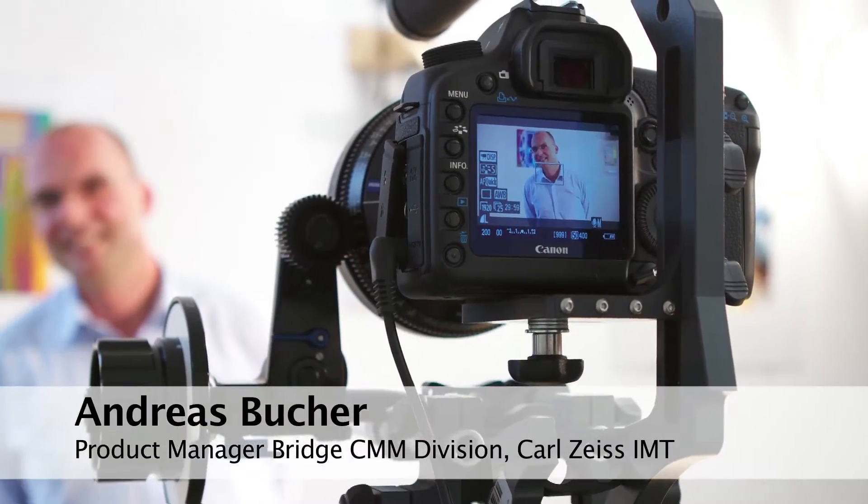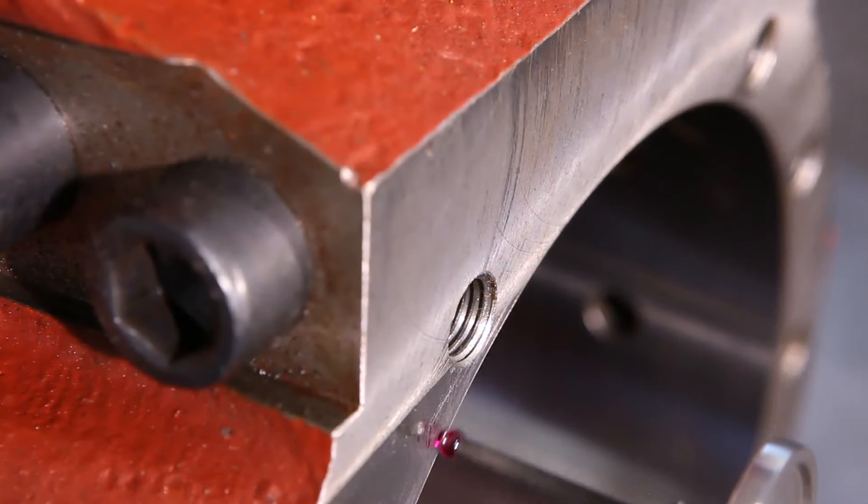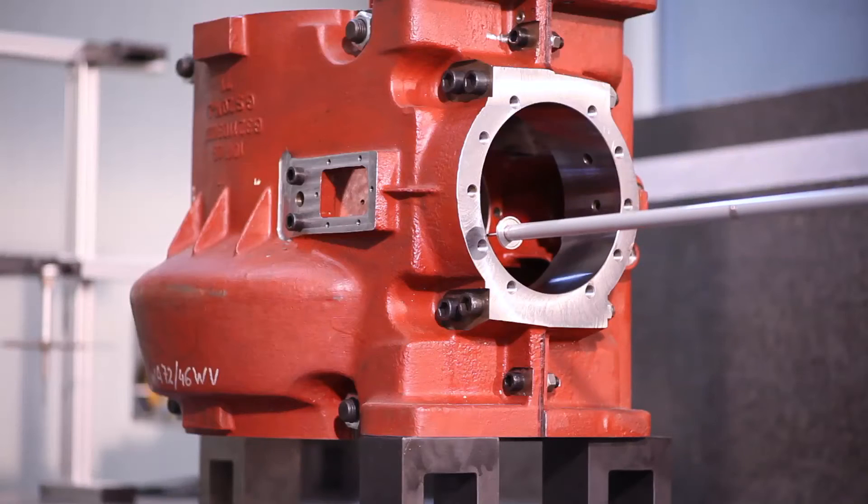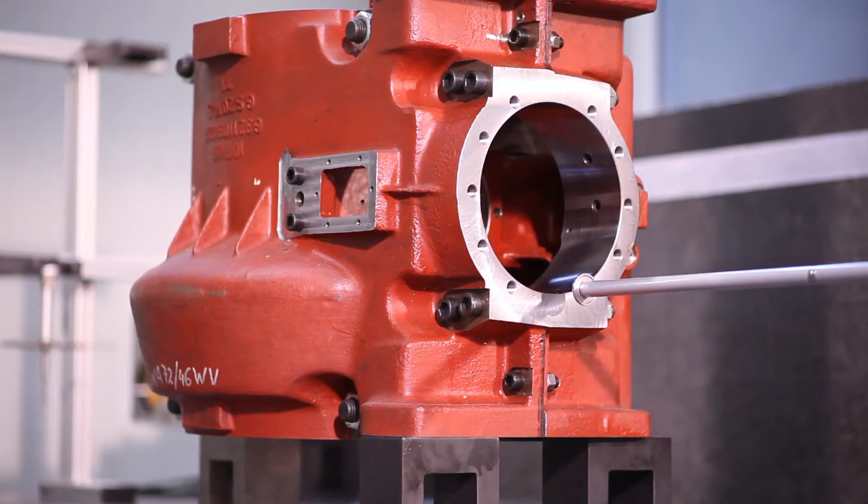The active measuring head follows the predetermined contour and recognizes and automatically corrects its journey versus the actual contour. In this way, a constant and stable measuring strength is applied continuously to the surface.